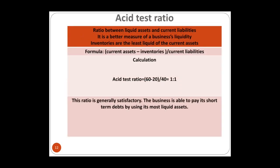The acid test ratio asks the same question but uses only the most liquid assets, excluding inventories. Of the three current assets — cash, trade receivables, and inventories — inventories are least liquid. If the answer is 1, the business can pay off its short-term debts from its most liquid assets without selling inventory, which is satisfactory. Less than 1 means the business cannot pay its short-term debts from its most liquid assets.